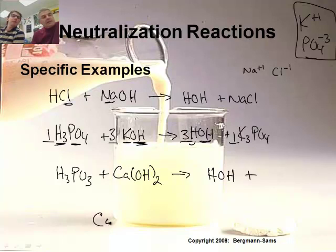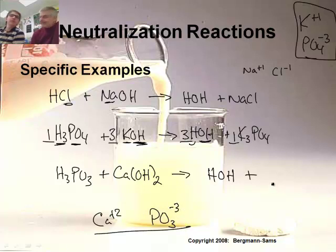Calcium is plus two charge. Phosphite. Phosphite. Phosphite. It's negative three. Yep. Those do not cancel out. I must make a six. Yes. So if I make a six, I need a three of a one and a two of the other. Yeah. So it's a Ca3 and a PO3 a two.